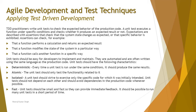Unit tests should have the following characteristics. First, deterministic: every time a test runs under the same conditions, it should produce the same result — consistent execution. Second, atomic: the unit test should only test the functionality related to it. Third, isolated: each unit test should exercise only the specific code it was initially intended for, and unit tests should not depend on each other or on dependencies in production code.